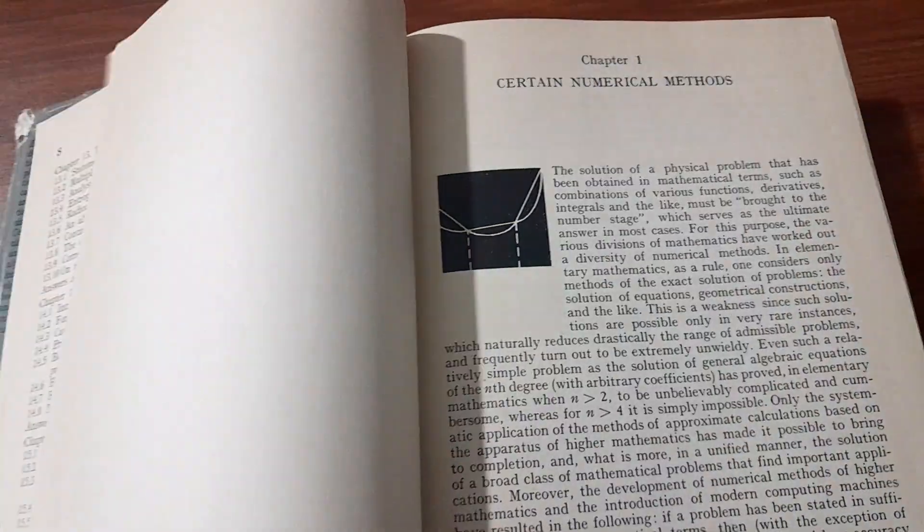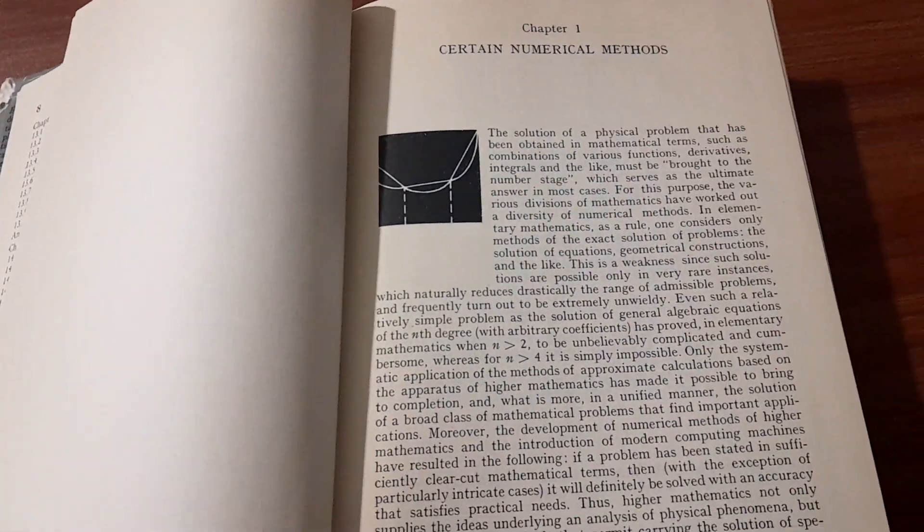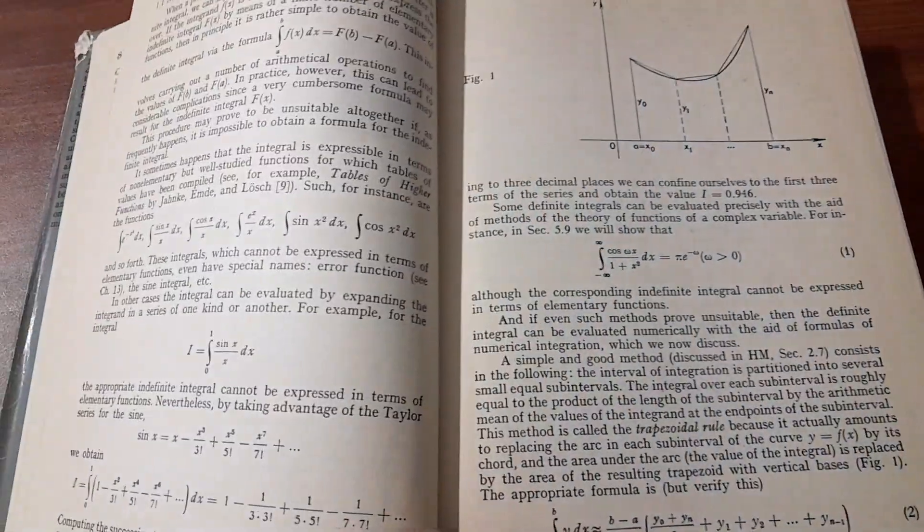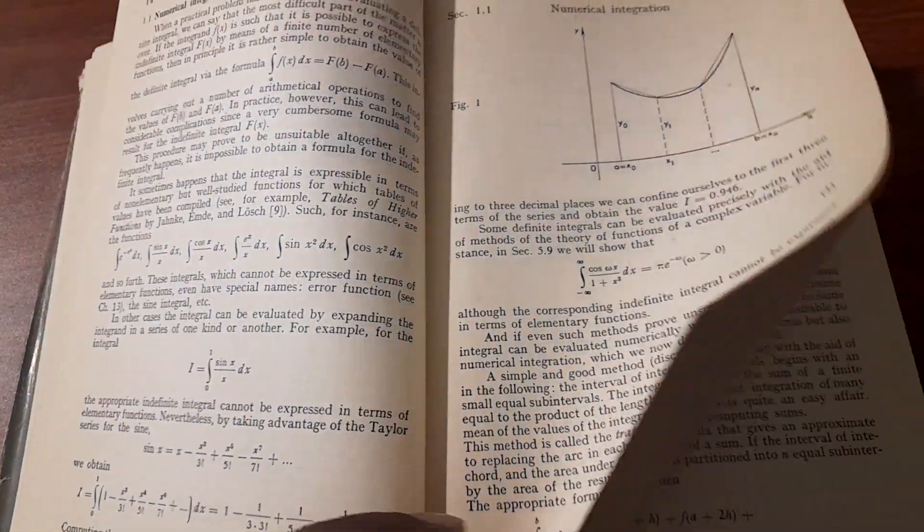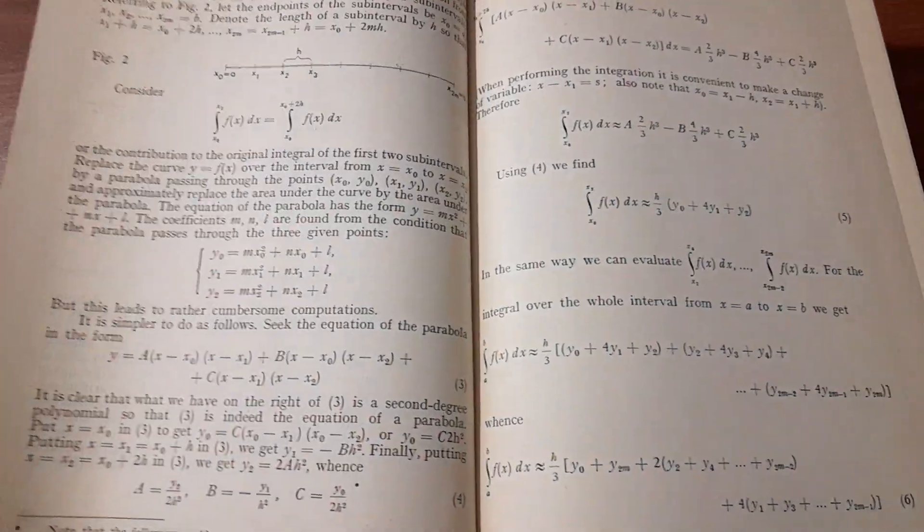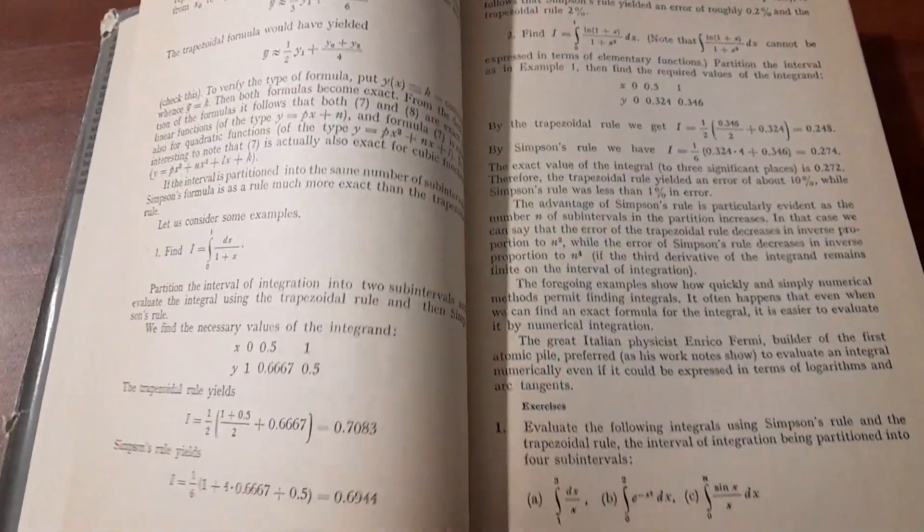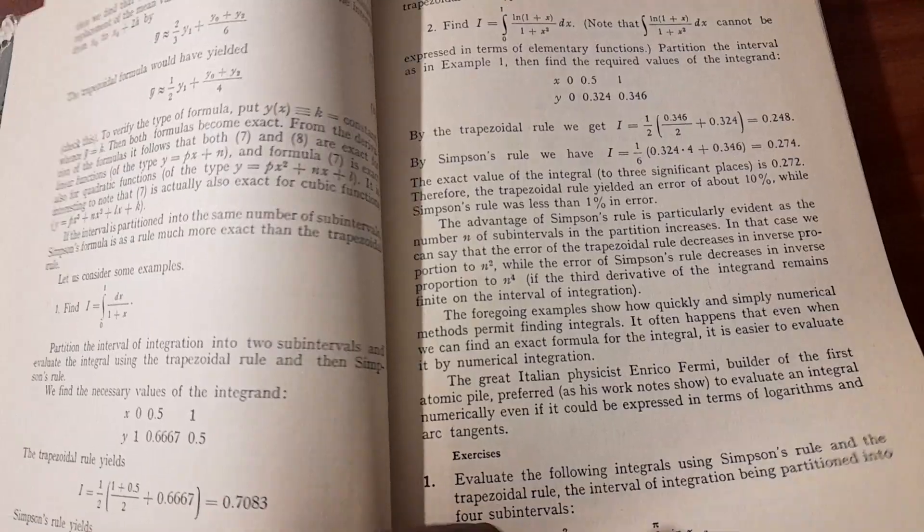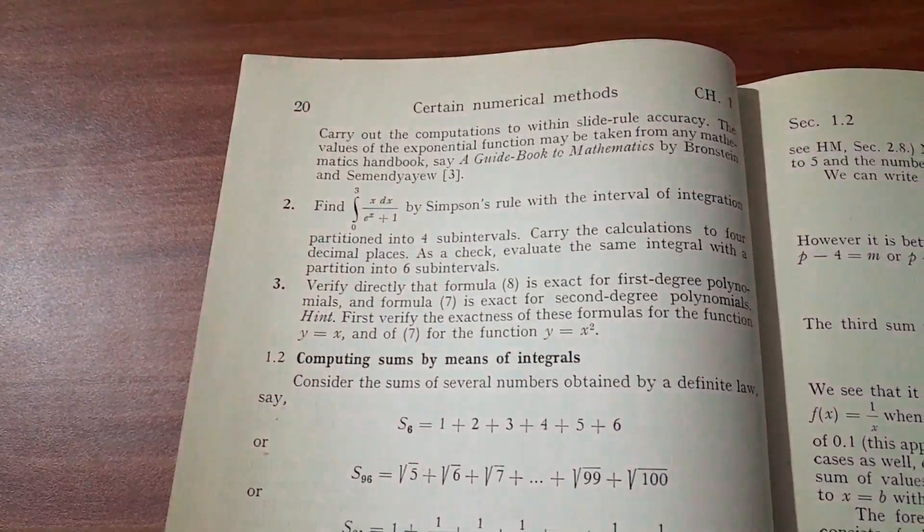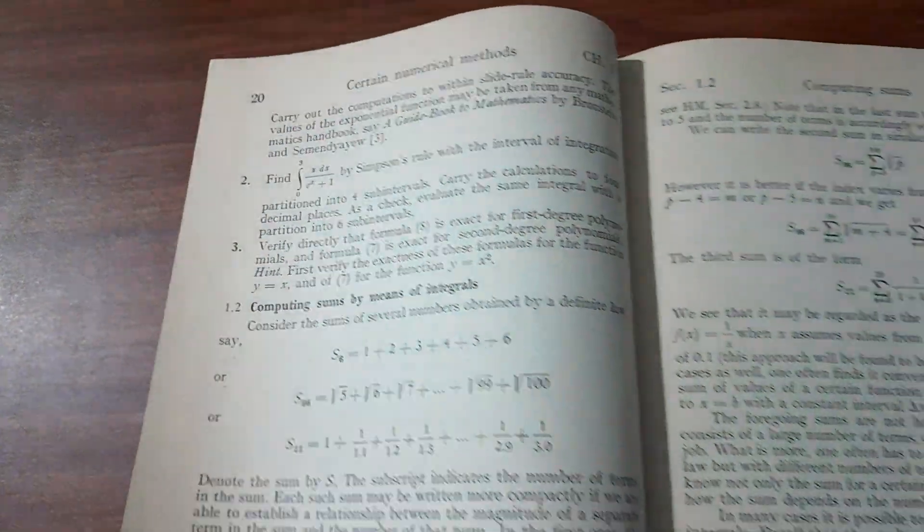So first we have preface, then chapter 1 is certain numerical methods. I'll just show you how this book is organized. We have section 1.1. At the end you have some problems, exercises. Here you have about three exercises.